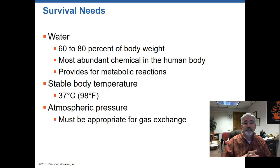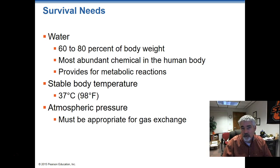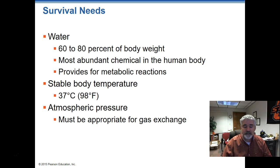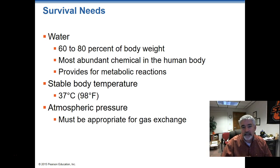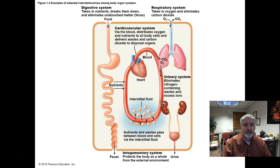A good stable body temperature for us is 98 or 98.6 degrees, and we need the correct atmospheric pressure because we're going to need that for gas exchange. We'll talk more about gas exchange when we're talking about red blood cells, and again when we talk about the respiratory system. There's also an article available that might help clarify that a little bit more.